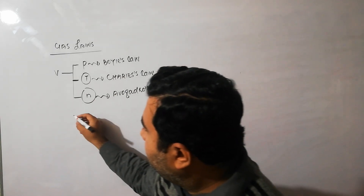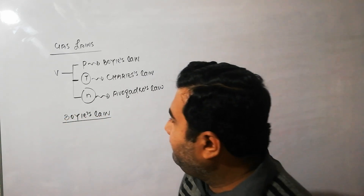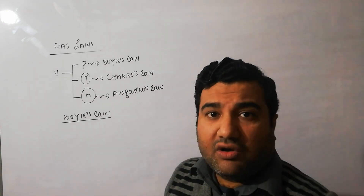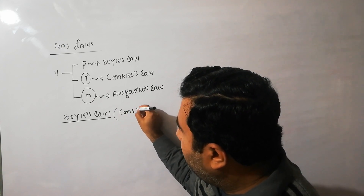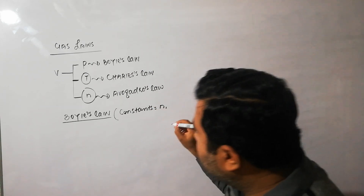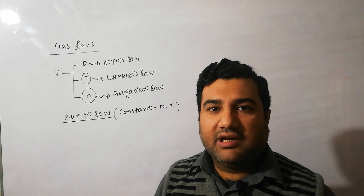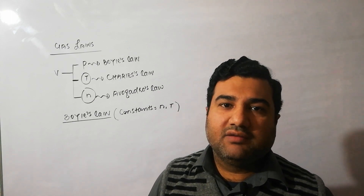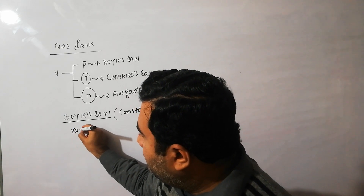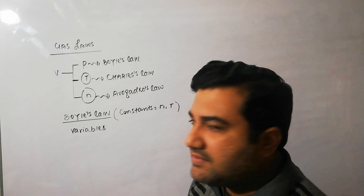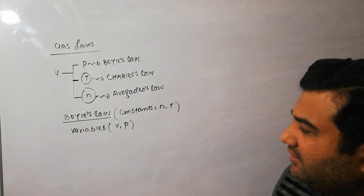Let us start with Boyle's Law. Boyle's Law was presented by Robert Boyle. Every law has certain constants and variables. The constants of Boyle's Law are the quantity of the gas — that is, the number of moles — and temperature. During the experiment relating the volume of a gas with applied pressure, you keep the number of moles and temperature constant. The variables that change during experimentation are volume and applied pressure.